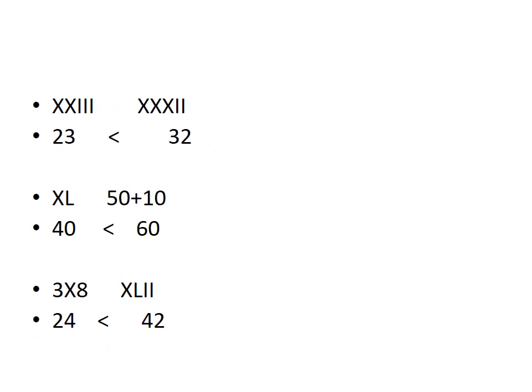Let's see a few more examples. First one: X, X and III. X means 10, X means 10 — 10 plus 10 = 20, then 3 lines: 21, 22, 23. Second side: X means 10, X means 10, 20, X means 10, 30, and 2 = 32. Which number is greater? 32 is greater.